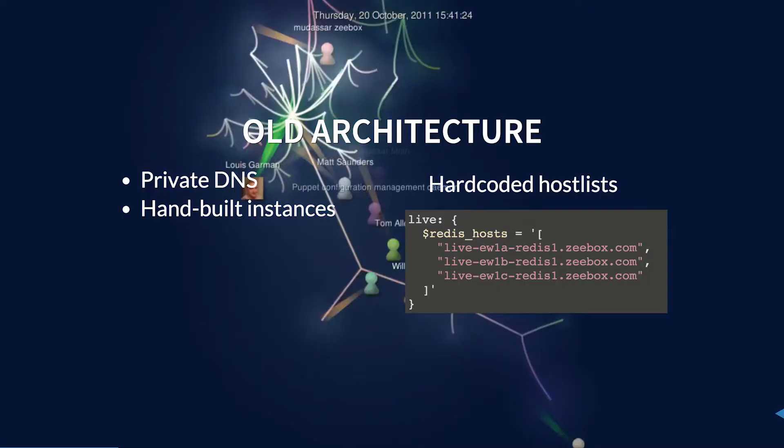Yeah, that didn't really quite fly. So back then the architecture was very different. We had private DNS, a lot of handle instances, but we also had hard-coded lists in Puppet. But why is this a problem?